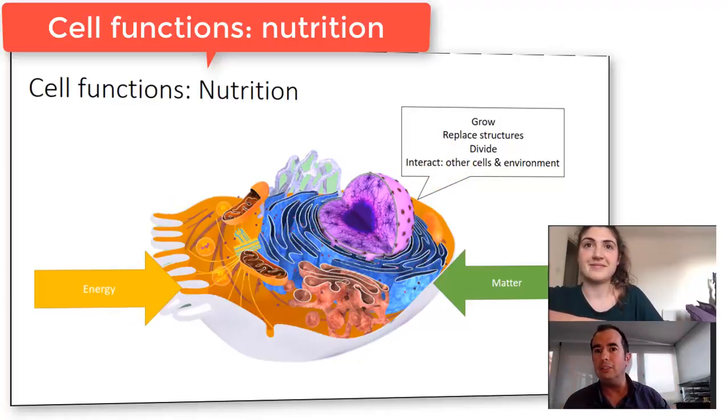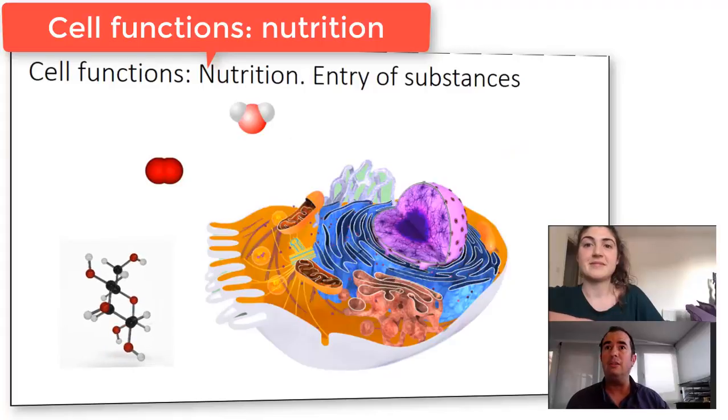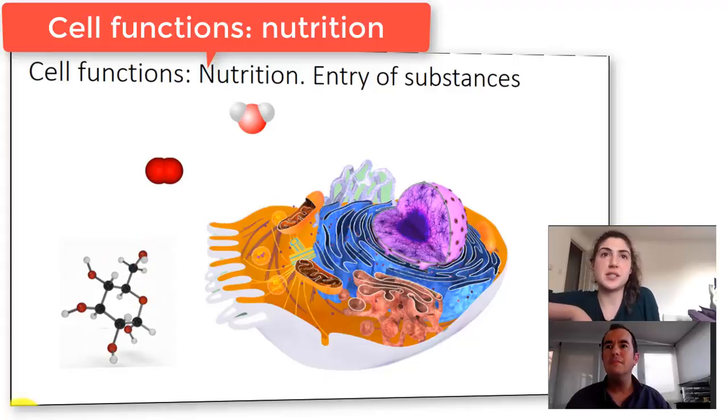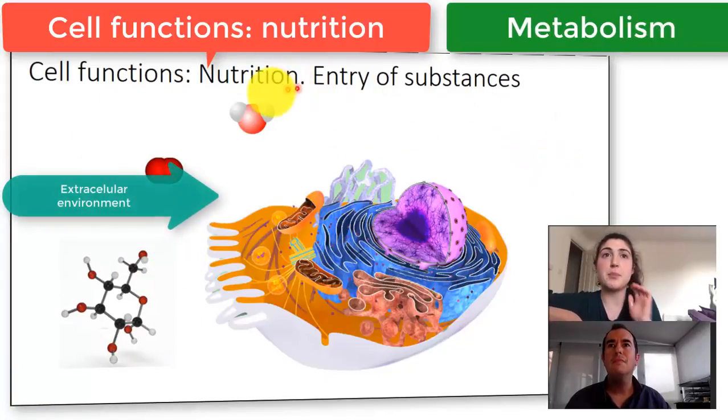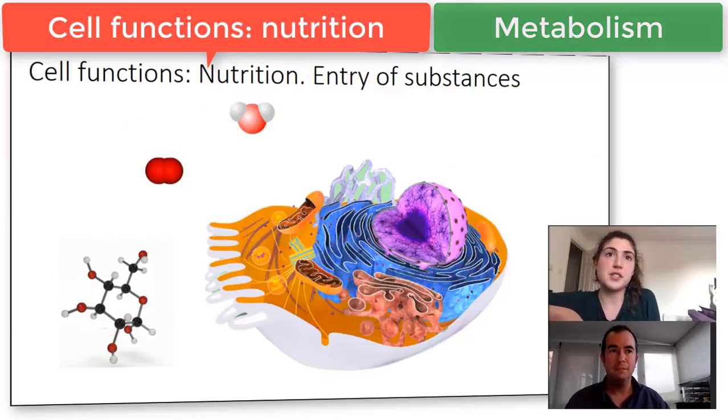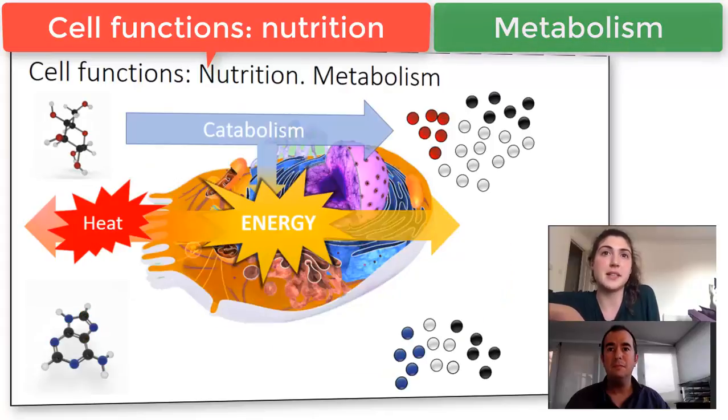So we have the intake of nutrient substances. In the extracellular environment there are nutrients that are brought into the cell and they are used to obtain matter and energy. These nutrients are used in the metabolism inside the cell.